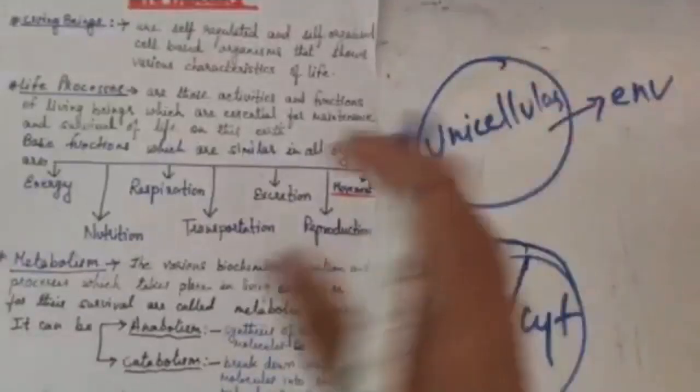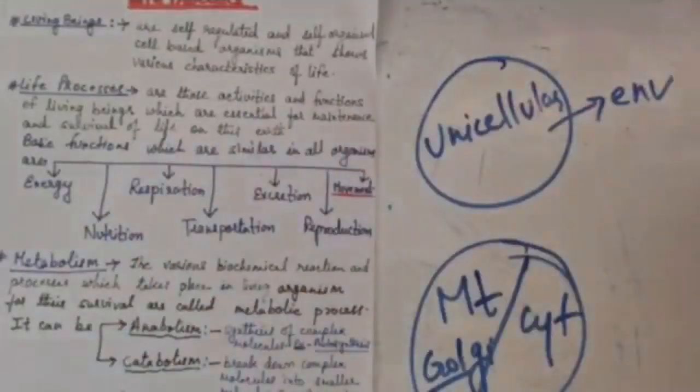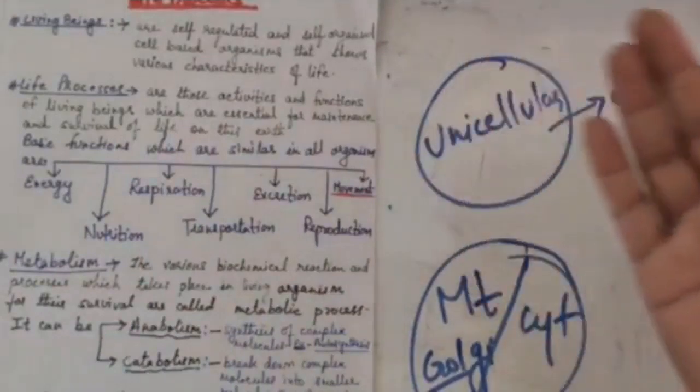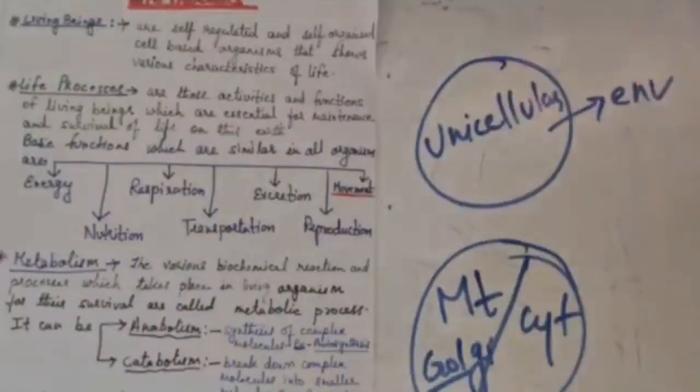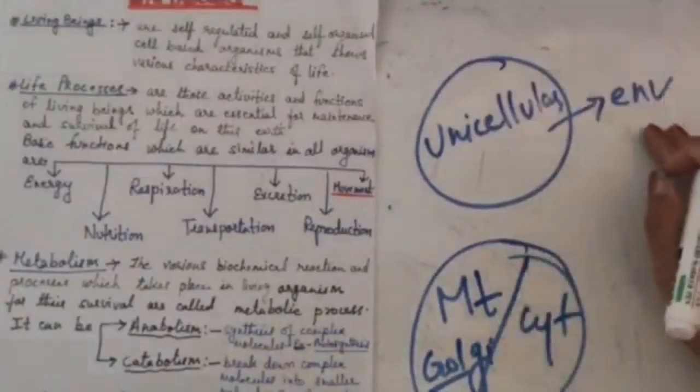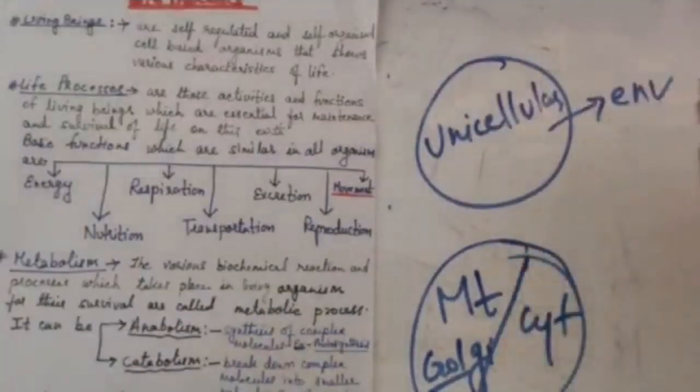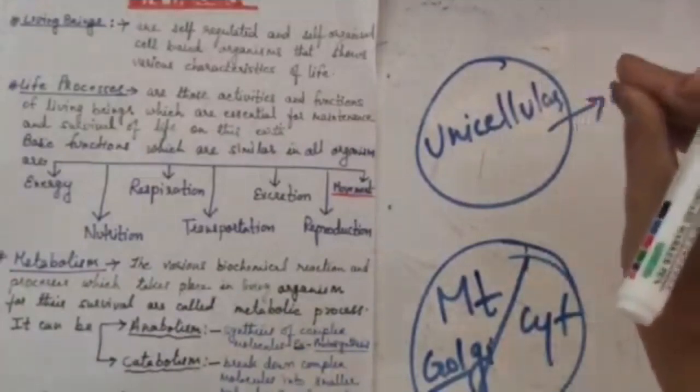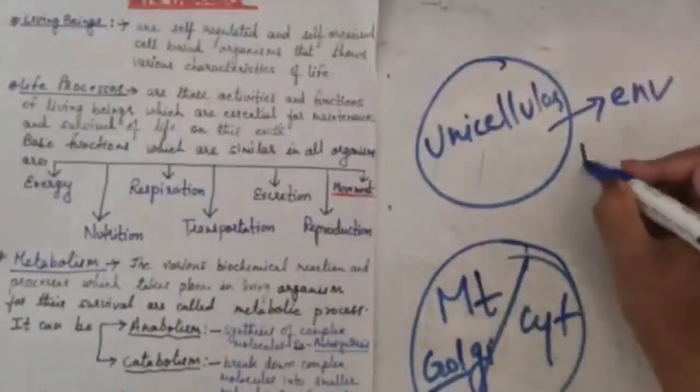There is no division of labor because there is no specific cell organelles, and the outer surface which is in contact with the environment. Thus a simple mechanism of transportation is required, which is diffusion.